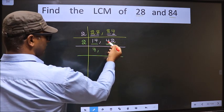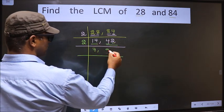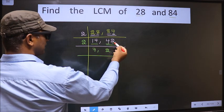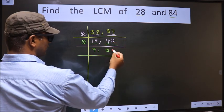The first number 4. When do we get 4 in the 2 table? 2 twos, 4. The other number 2. When do we get 2 in the 2 table? 2 ones, 2.